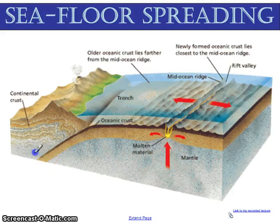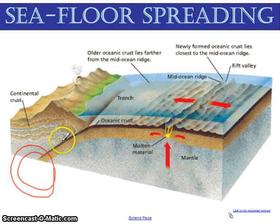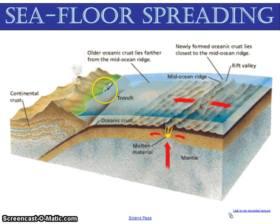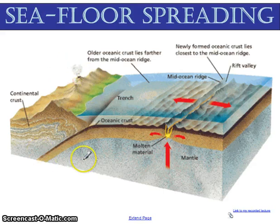The other thing that can happen to this pool of magma that has been melted due to friction between the plates is it could burst through a crack in the continental crust and create a volcano, like you see here. So there are two things that could happen to this magma as it is melted when it is subducted.